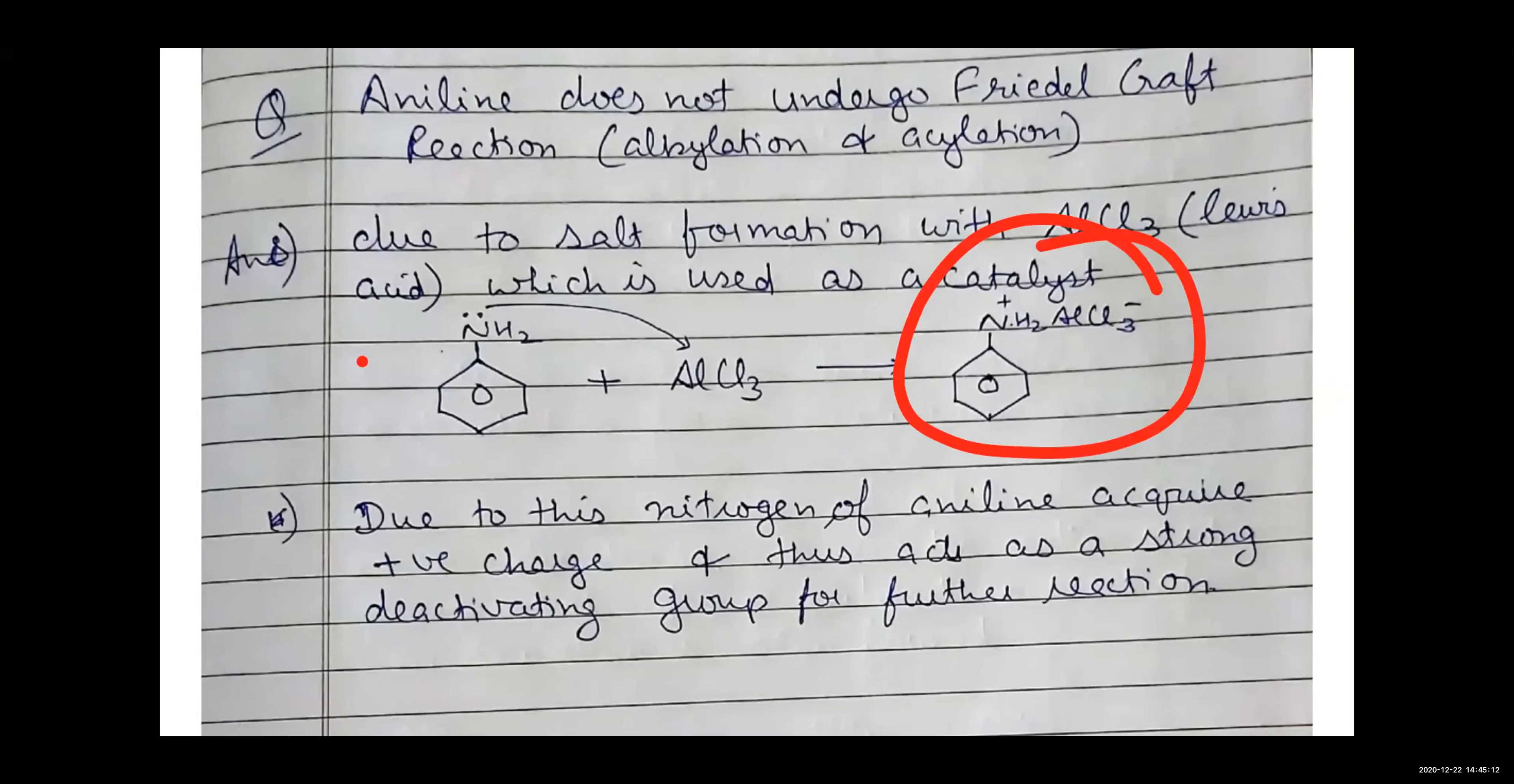And we have this compound. If you look at this compound, because nitrogen has a lone pair, aluminum comes to nitrogen, it will be plus charge. Due to the plus charge, the nitrogen is a compound. It will be a strong deactivating group. It will be converted into strong deactivation. Therefore, there is no reaction further.